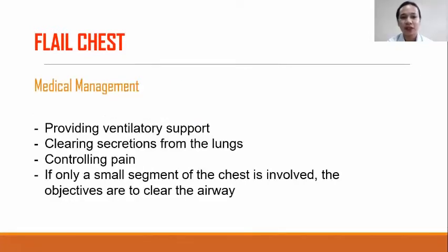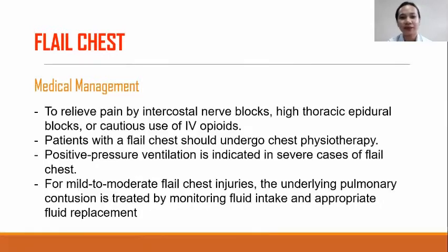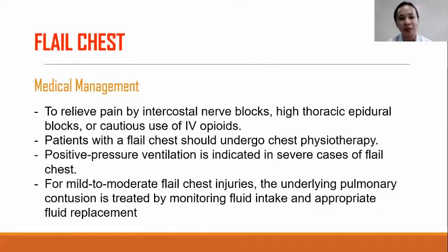Medical management goals are to provide ventilatory support, to clear secretions from the lungs, and to control the pain. If only a small segment of the chest is involved, the objectives are to clear the airway through positioning, coughing, deep breathing, and suctioning to aid expansion of the lungs. Pain is relieved by intercostal nerve blocks, high thoracic epidural blocks, or cautious use of IV opioids. Patients with a flail chest should undergo chest physiotherapy. Positive pressure ventilation is indicated in severe cases. For mild to moderate flail chest injuries, the underlying pulmonary condition is treated by monitoring fluid intake and appropriate fluid replacement.